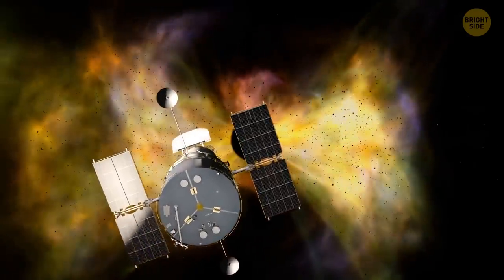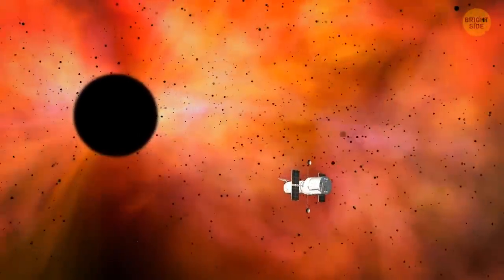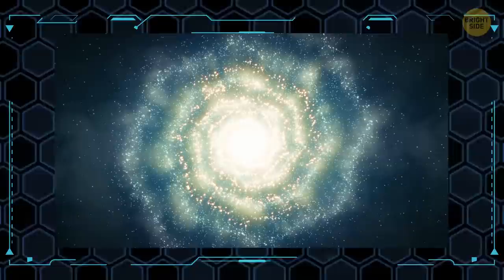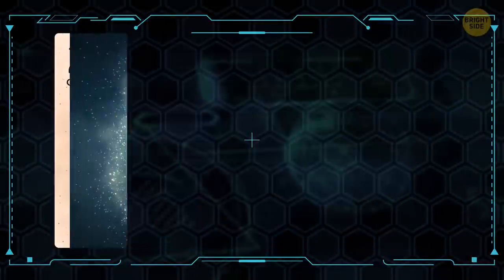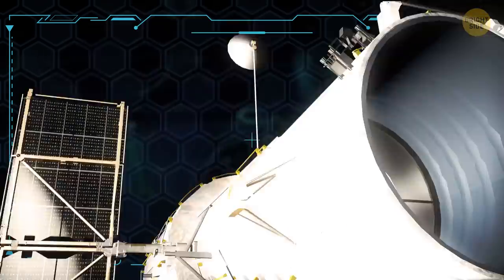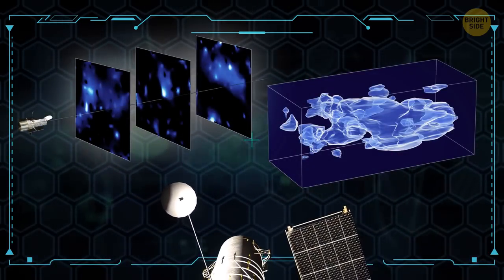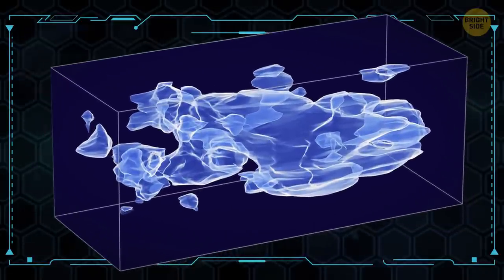Let's look at some other important discoveries we've made with the help of Hubble. Like dark matter, which we can't see but know is there because of its effect on gravity. It makes up for about 23% of the universe. By looking at how it affects light, the Hubble telescope helped make 3D maps of where dark matter is. These maps show that dark matter seems to be getting clumpier over time, which means it behaves very similarly to how gravity does.